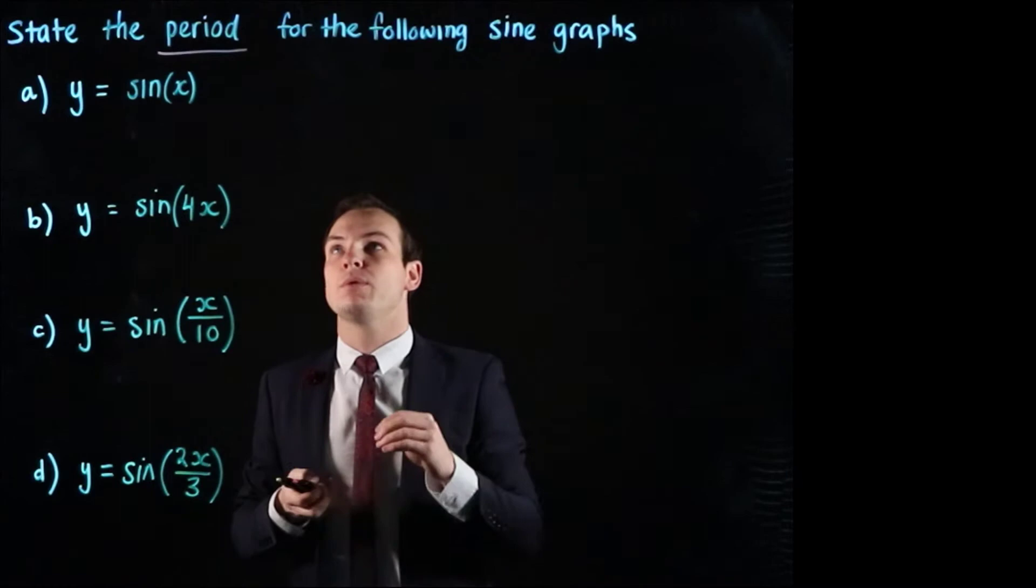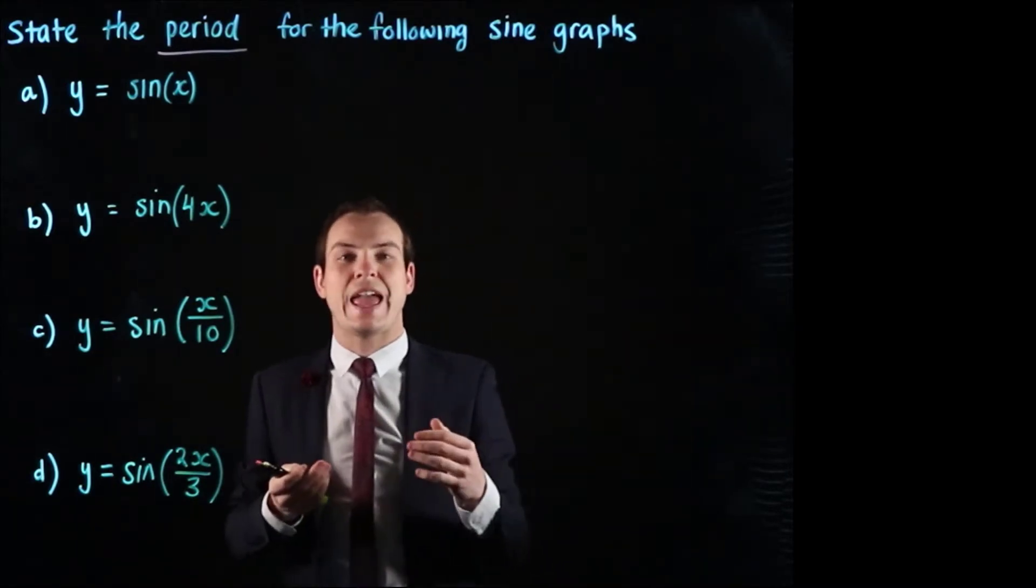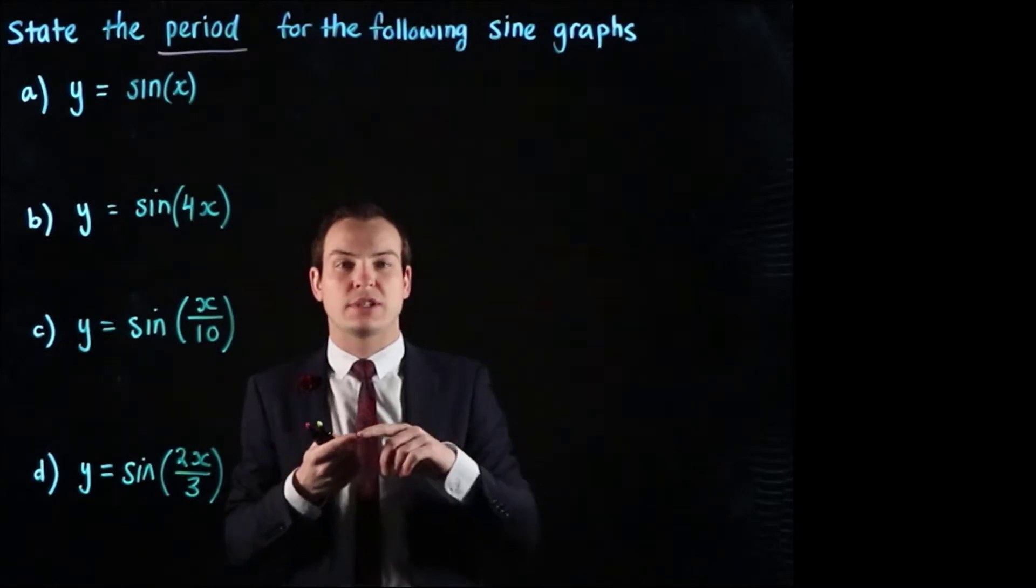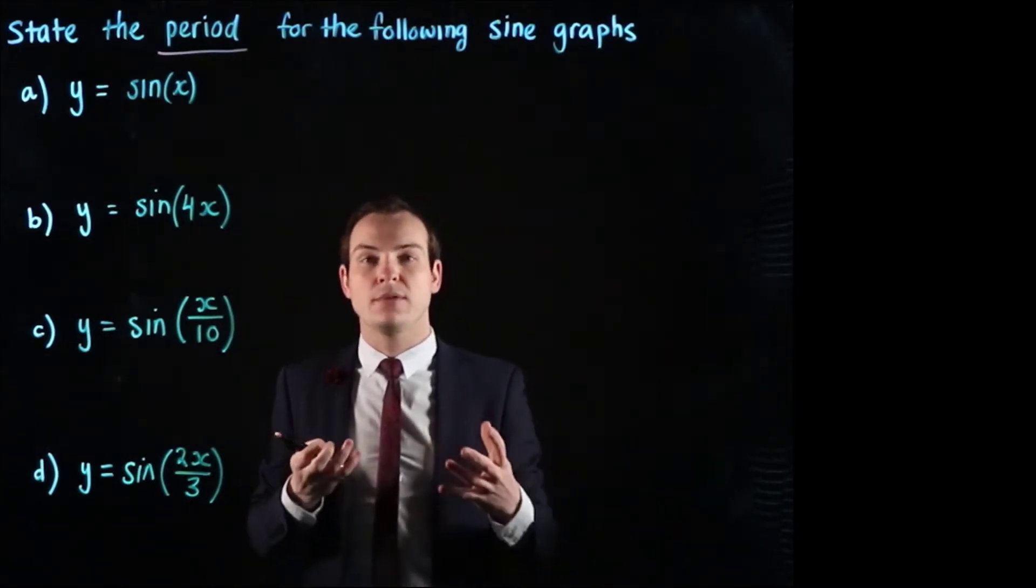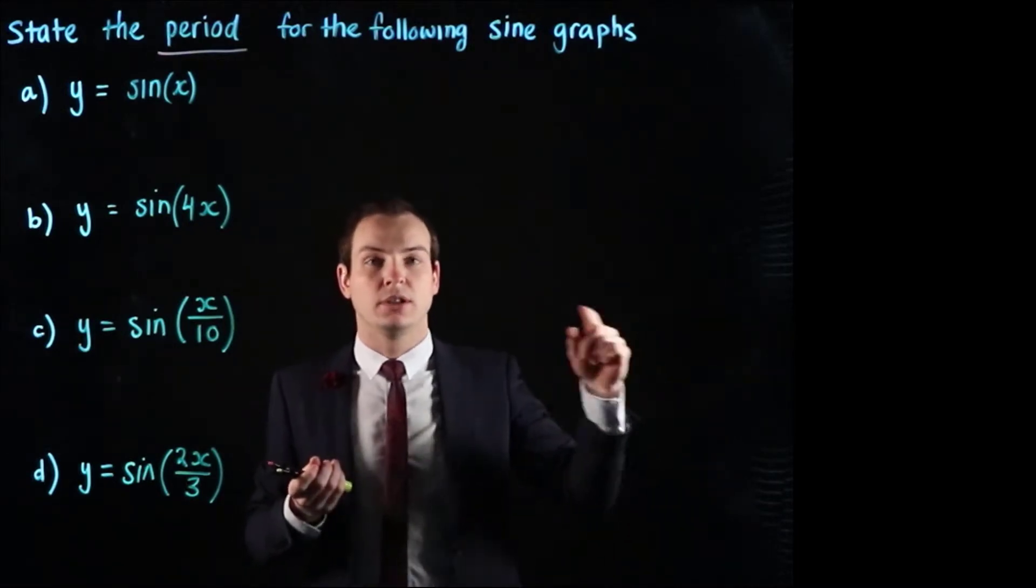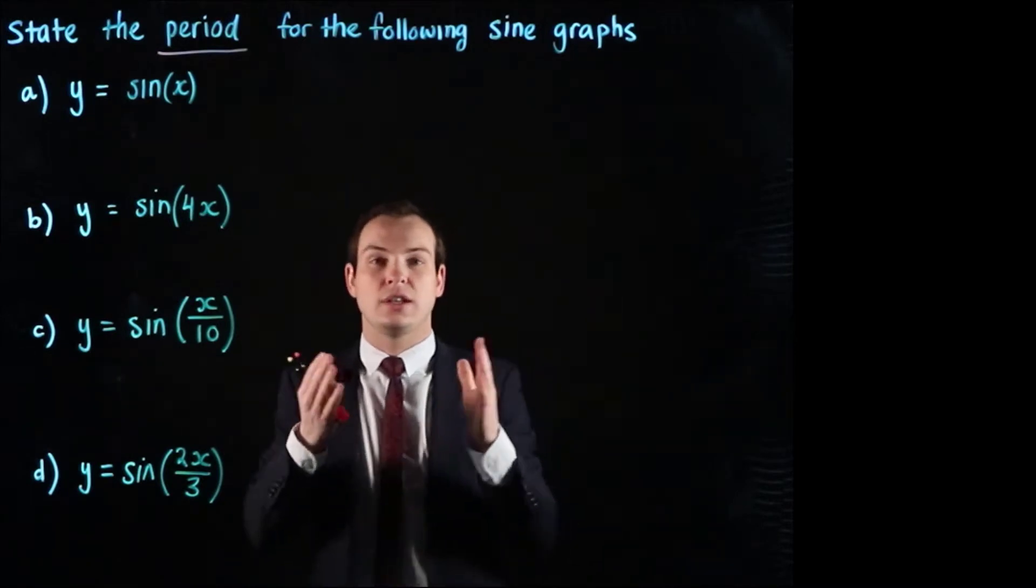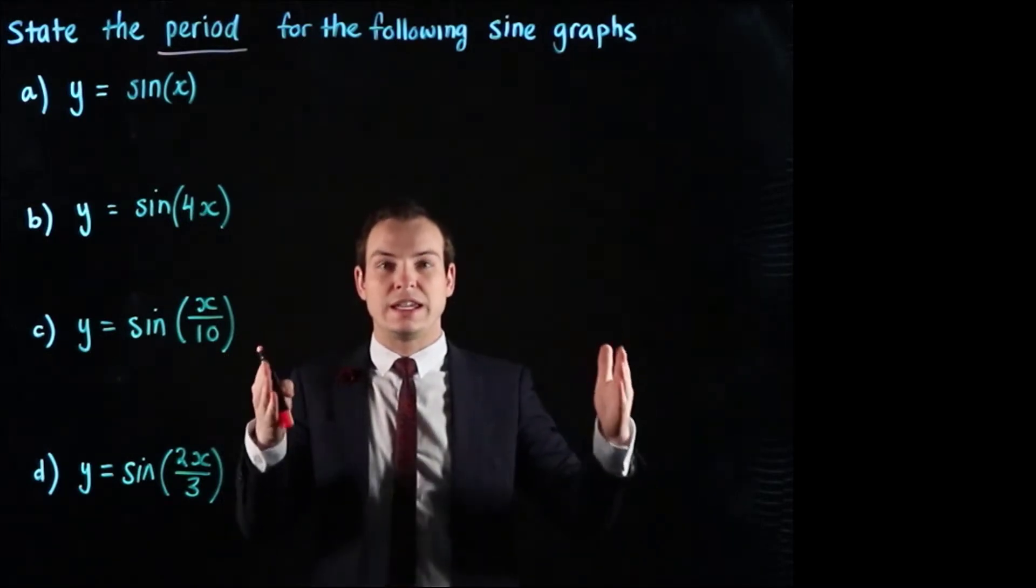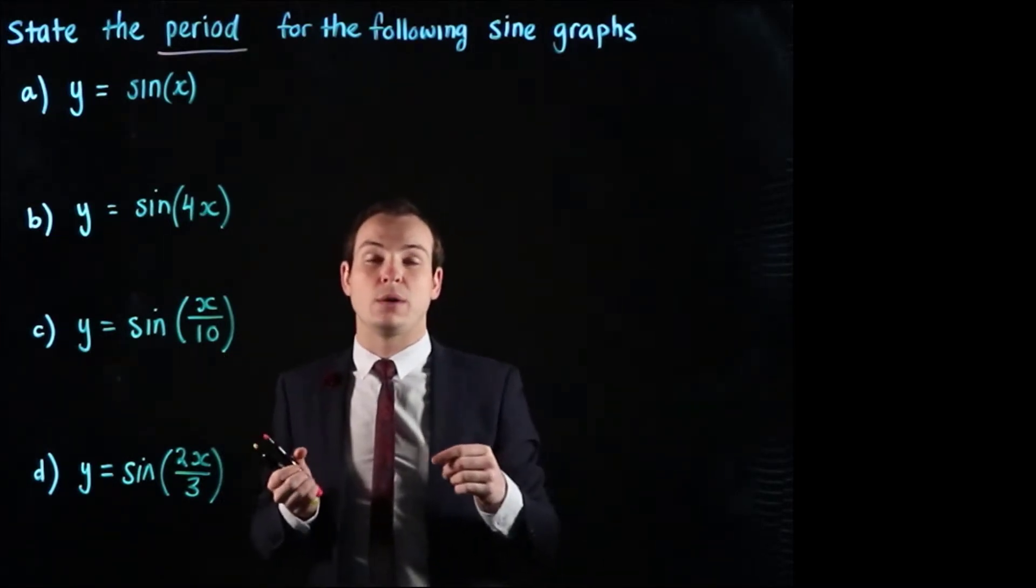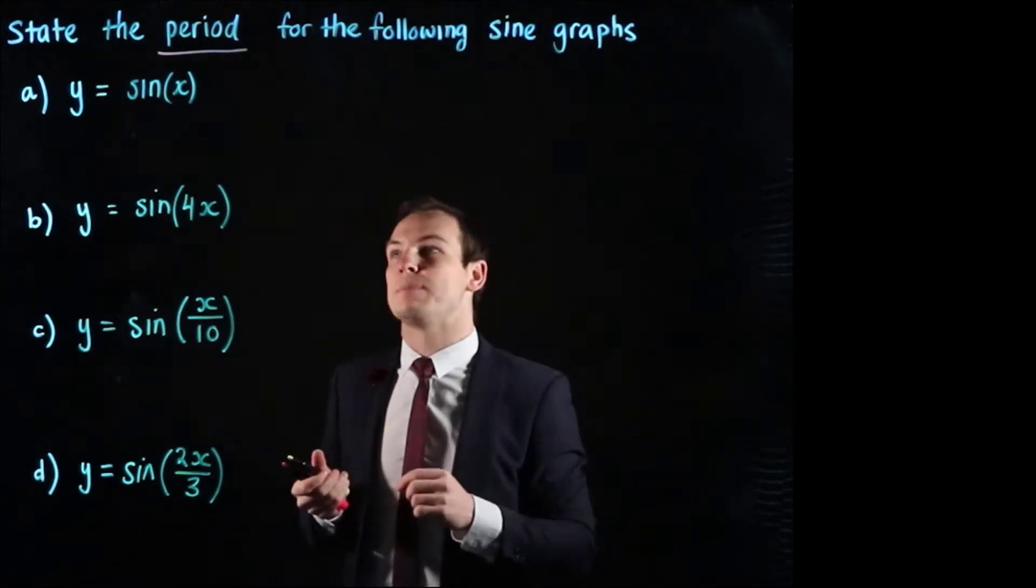And when we refer to the period of a sine or indeed a cosine graph, it's essentially how long it takes for the graph to complete a full cycle. So you may have seen already that sine and cosine have a particular shape, the curve functions, and they take a certain distance or a certain interval to complete one cycle and that cycle or that length of the cycle is known as the period.